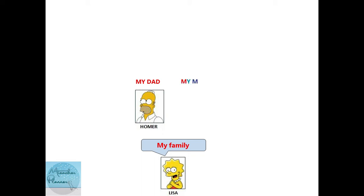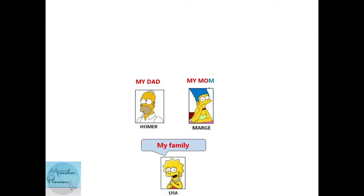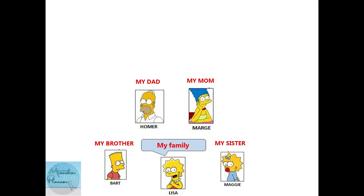On the other side — por el otro lado — we have 'my mother', mi madre: Marge. You can also say 'my mom' — mi mamá. And he is her brother — él es su hermano — Bart. And her sister — su hermana — Maggie.